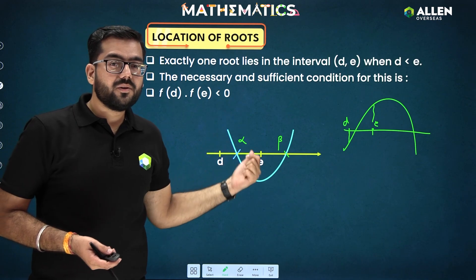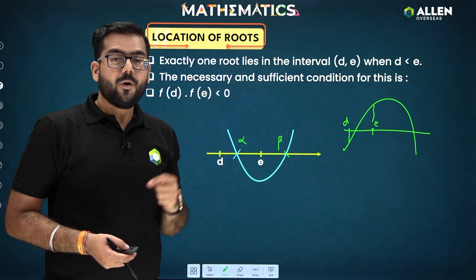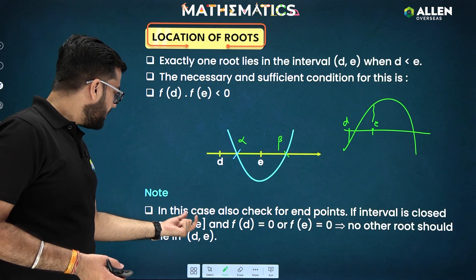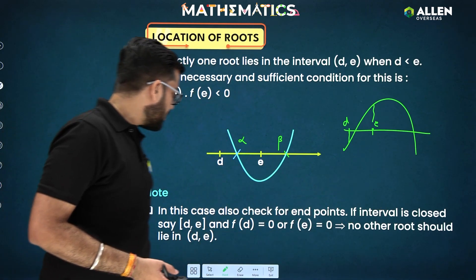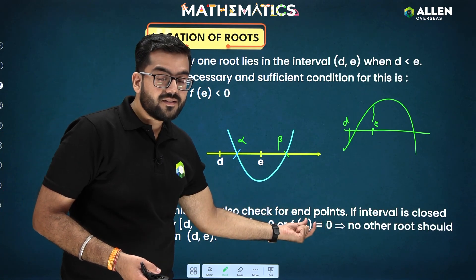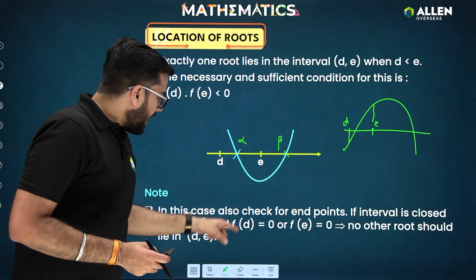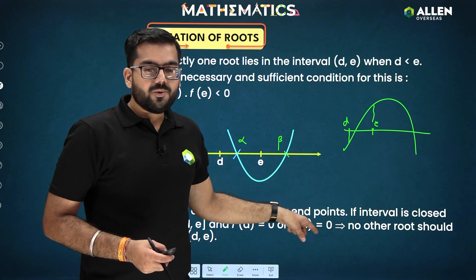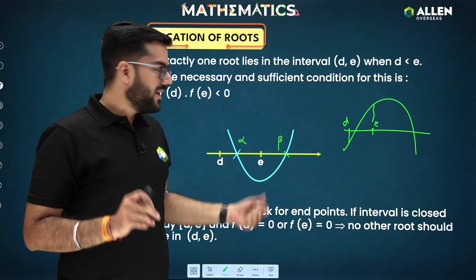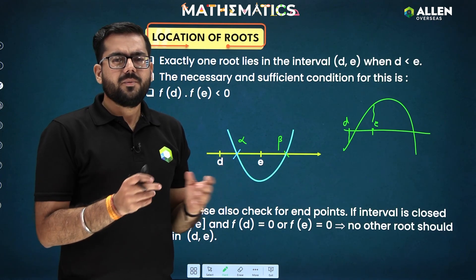One important note: what if f(d) = 0 or f(e) = 0? If the interval is closed [d, e] and we get zero at d or e, that means d or e itself is a root. In that case, we must check that no other root lies between d and e — because if d or e are roots, they already lie on the boundary, so there will be no other root in between.